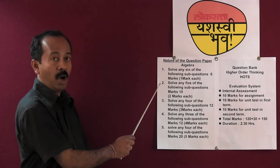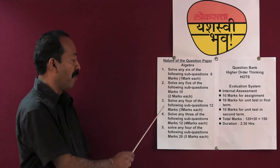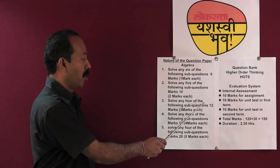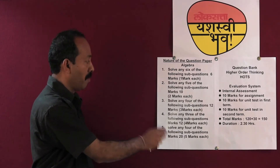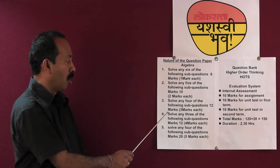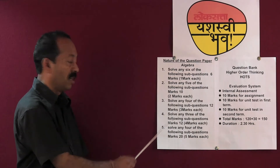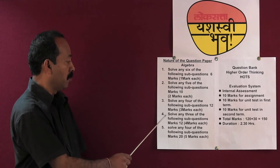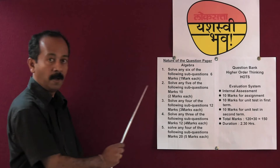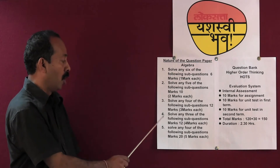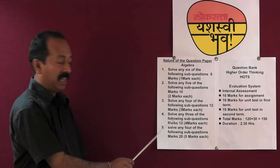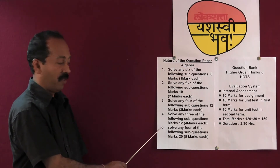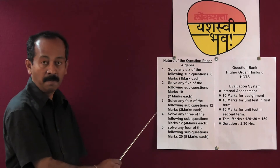Question 3: solve any 4 sub-questions, with a weightage of 3 marks each — total weightage is 12 marks. Question 4: solve any 3 sub-questions, with a weightage of 4 marks each — total weightage is 12 marks. Question 5: solve any 4 sub-questions, with a weightage of 5 marks each — total weightage for this question is 20 marks.